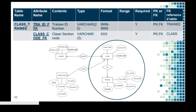That's how to create a data dictionary. So again, a data dictionary has the following elements: the table name, the attribute name, the contents, the type, the format, the range, whether it is required, primary key or foreign key, and the table to which it is referenced.